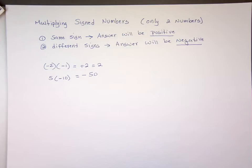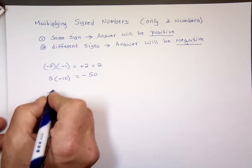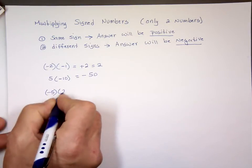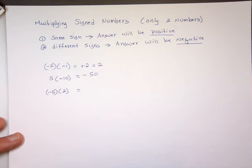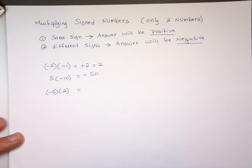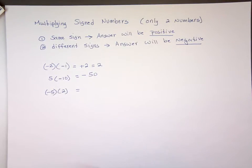Five times a negative five. Same sign or different signs? Different. The result is negative. Notice I don't pay attention to which one is bigger or smaller — in multiplication, that is not important. Same sign, the answer is positive. Different signs, the answer is negative.